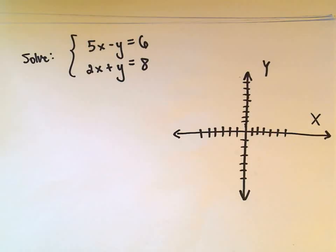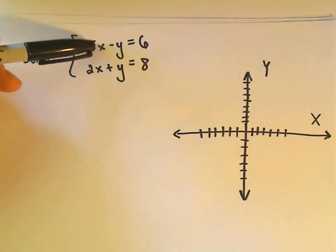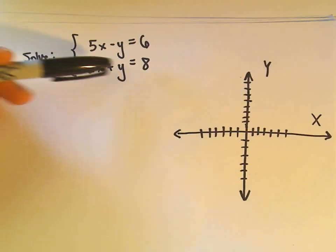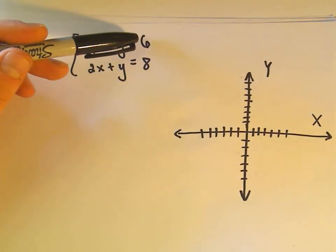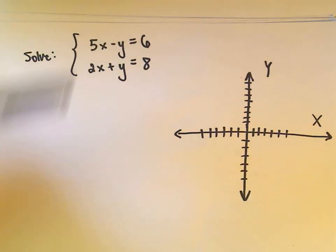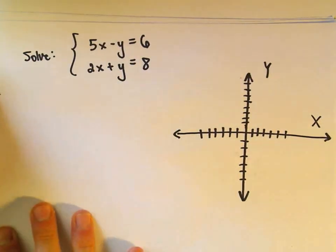And again what we're trying to do is we're trying to find a value for x and y that we can plug into both equations simultaneously and get a true statement. So, we could ask ourselves, is (0, 8) a solution?